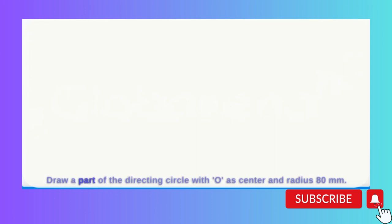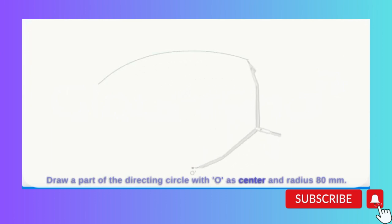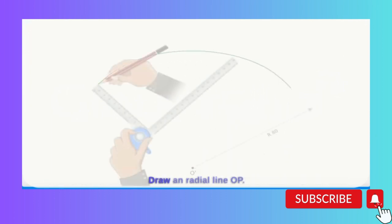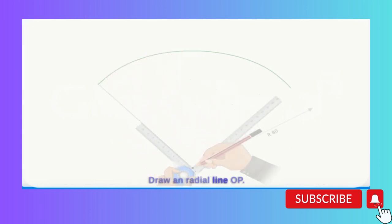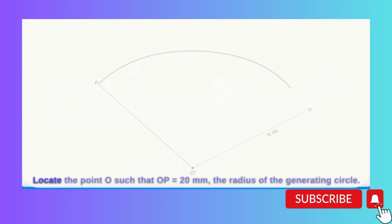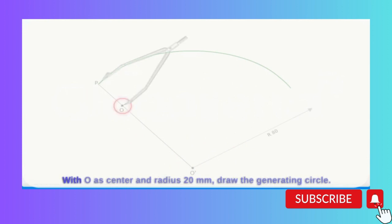Draw a part of the directing circle with O' as center and radius 80 mm. Draw any radial line O'p. Locate the point O such that OP equals 20 mm, the radius of the generating circle. With O as center and radius 20 mm, draw the generating circle.